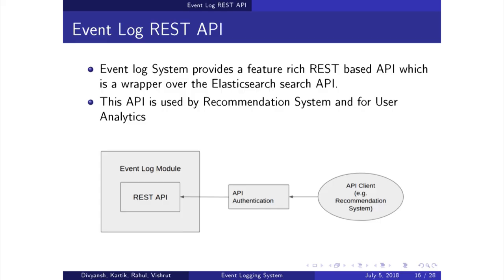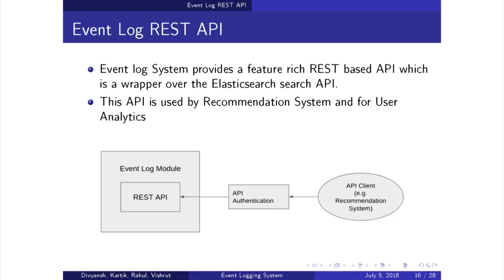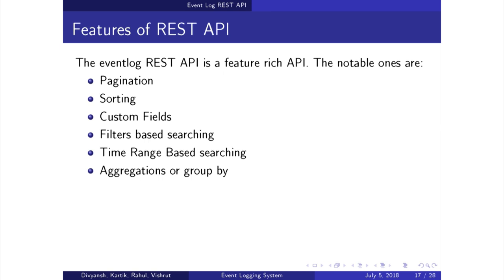Our event log system provides a REST-based API which is used to extract data from Elasticsearch. It is basically a wrapper over the already existing search API of Elasticsearch. Our API is secured using token-based authentication, and the data obtained will be used by the recommendation system to train their module and also for user analytics. Features include pagination — to avoid large result loads, results are paginated for more effective handling — as well as sorting, filters on searches, and grouping of data according to special categories.